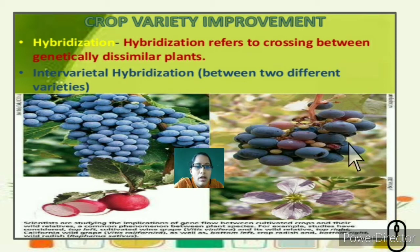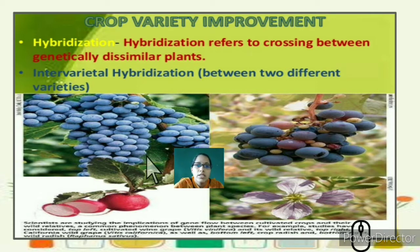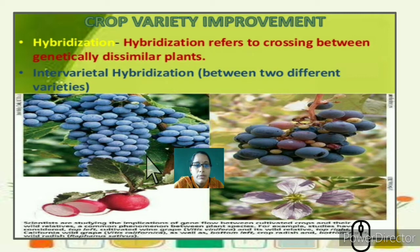The top-right image shows the wild grape variety and the California white grape, while the bottom-left shows the crop radish and the bottom-right the wild radish. Based on these genetic studies, scientists are examining characteristics in crop cultivation, working to cross genes of two different varieties so that a new plant develops with both desired characteristics — this is the basis of crop variety improvement.